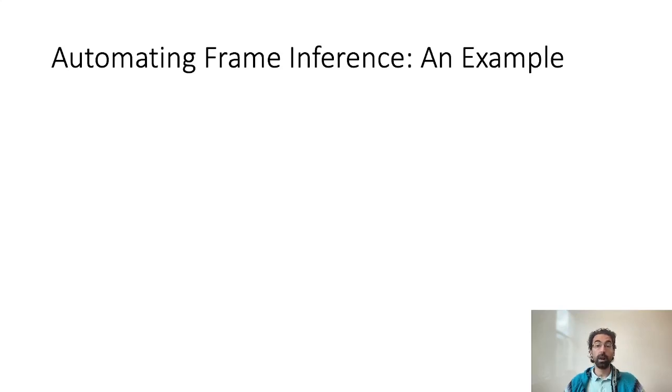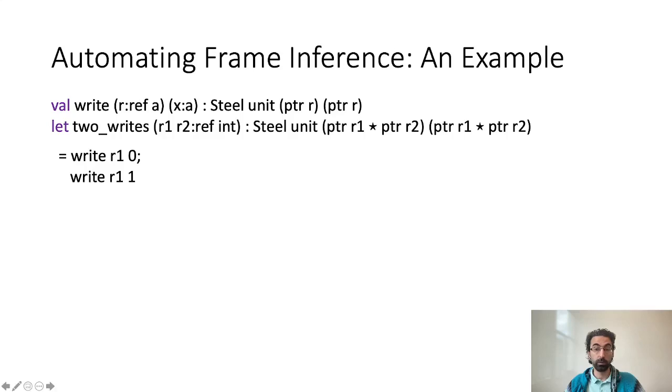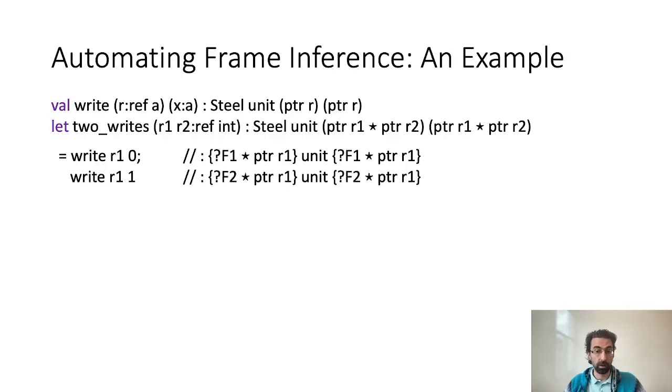Now that we automated applications of the frame rule, one problem remains. We must automatically infer the frames created, that is, the terms that were prefixed by a question mark. Let me explain how this works in STEEL on this simple example which performs two successive writes on reference R1. First, the frame rule is automatically applied to both function calls, generating frame F1 for the first call and F2 for the second call. So now we need to solve F1 and F2.